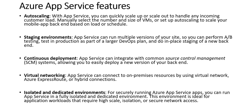For continuous deployment, App Service can integrate with common source control management tools including GitHub, Bitbucket, Stash, Google Drive, OneDrive, and many others. For virtual networking, App Service can connect to on-premises resources using virtual network, ExpressRoute, hybrid connection, or site-to-site VPN tunnel. You can also run App Service in a fully isolated and dedicated environment — ideal for workloads requiring high scale, isolation, or secure network access — by using App Service Environments and App Service Plans.